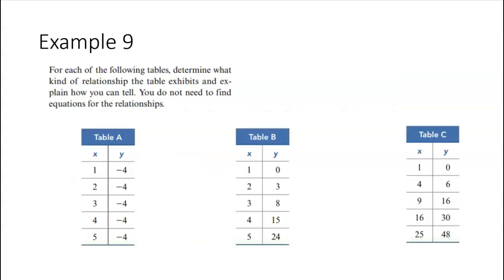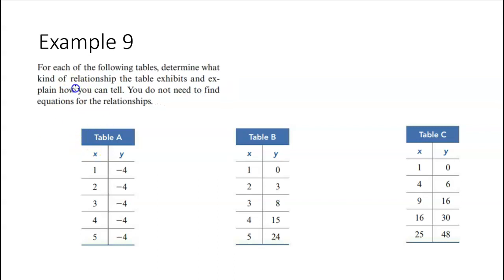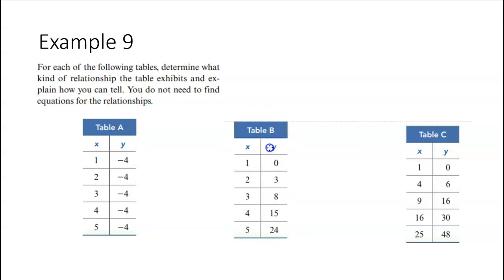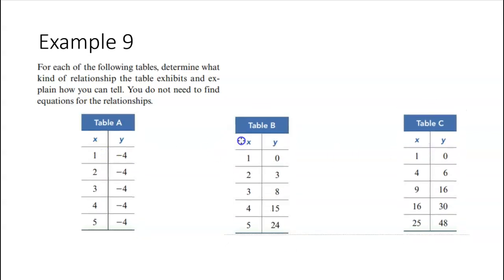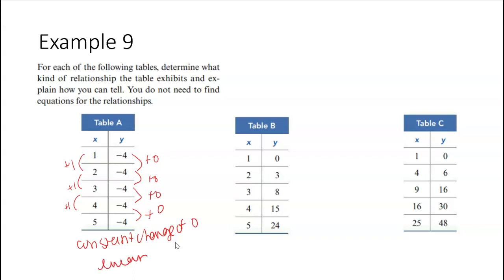So let's do an example and then you'll do a U-try. All right. So for each of the following tables, determine what kind of relationship exists, how you can tell, and we do not need to find equations. So that's good. So for table A, first, I'm just going to look here and I'm going to see, okay, these are constantly increasing by one. Okay. And then what's happening here? These are increasing by zero, but it is a constant value of zero, right? So that's a constant change of zero. So that's linear, constant change.